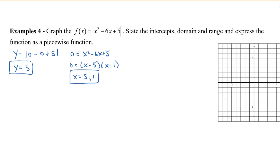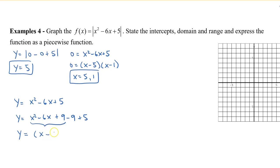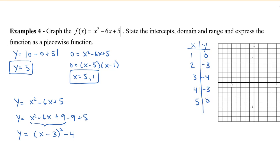Now to graph, we need to rewrite in vertex form. So we have y equals x squared minus 6x. To complete the square, we take half of negative 6 and then square it, giving us plus 9 and minus 9, with the constant 5 at the end. Factoring the first three terms, we get x minus 3, all squared, and then negative 9 plus 5 is negative 4. So vertex form is y equals the quantity x minus 3 squared, minus 4. Doing a quick table with vertex 3, negative 4, and picking additional x values, I get the points 0 and 5, negative 3 and 0, negative 3 and 0. I'll also pick x equals 6, which gives y equals 5. Let's plot these six points on the graph.